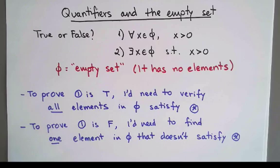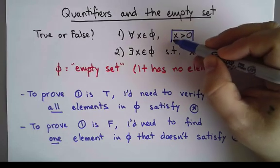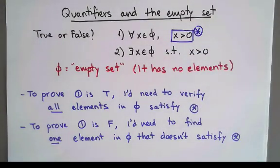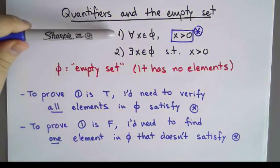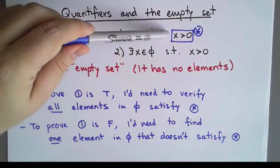I'm still concentrating only on the first statement, and the key inequality we're playing with here is this one. I'm going to call this inequality star. And what we've learned from the previous two examples is that to prove that one is true, I would need to verify that all the elements in the empty set satisfy this.